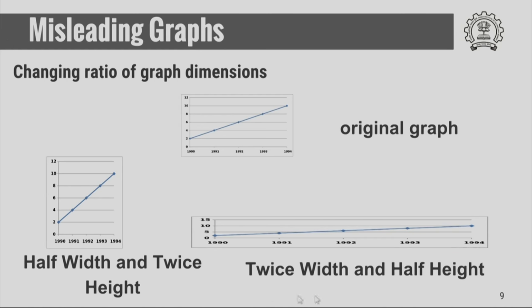This is another example of a misleading graph created by changing the ratio of graph dimensions. The top figure shows the original graph. The bottom-left figure is misleading because the graph has been scaled down by a factor of half in width and scaled up by a factor of 2 in height, making the slope appear steeper. In the bottom-right figure, the width is scaled up by a factor of 2 and the height scaled down by a factor of 2, making the slope appear smaller. Therefore, you should avoid changing the ratio of graph dimensions.